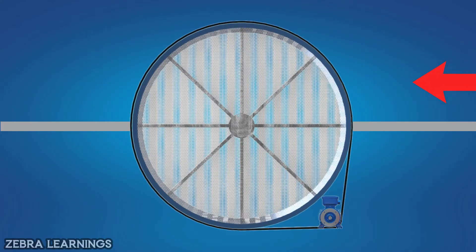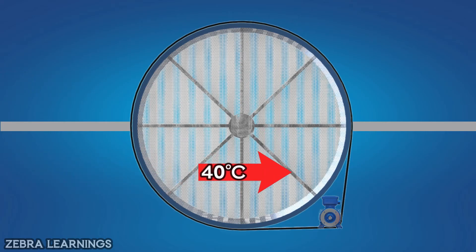At the top of the FAHU, the return air from the building enters at 25 degrees Celsius. At the bottom, fresh air from outside comes in at 40 degrees Celsius.